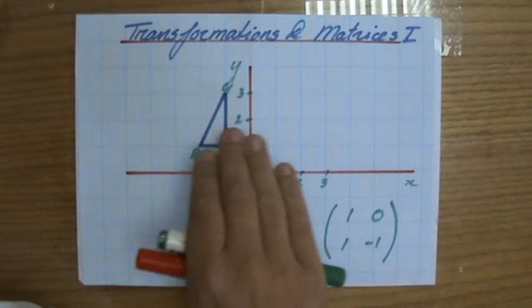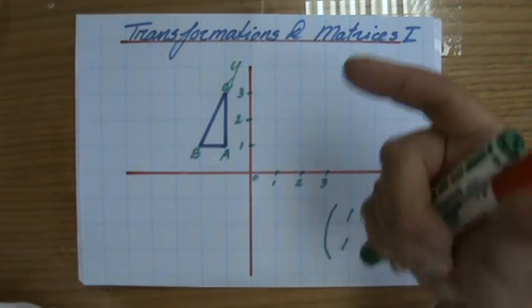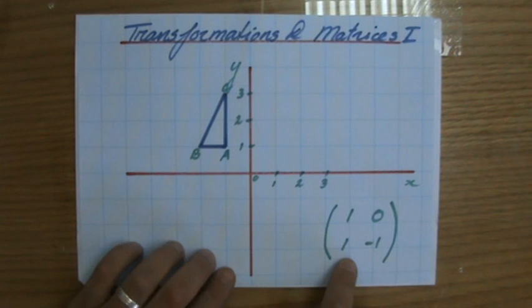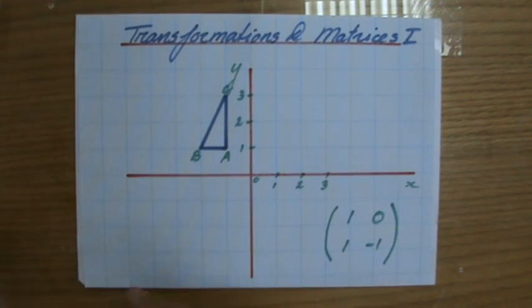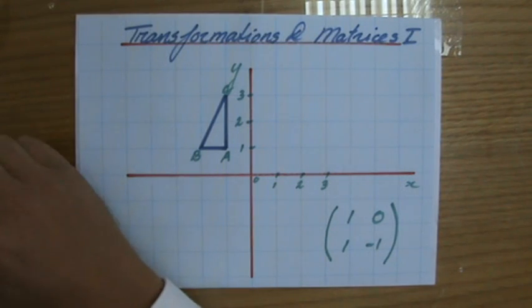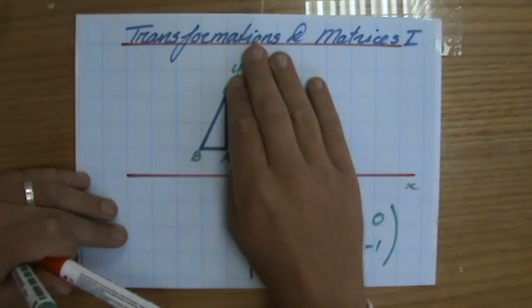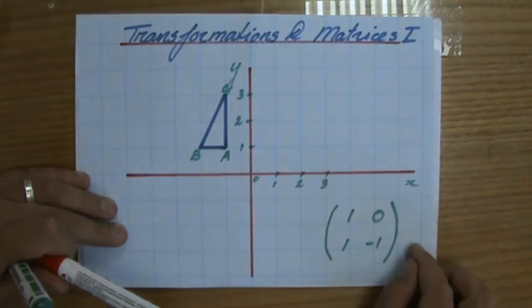But now we're going to do transformations using a particular matrix. I've written down here the 2x2 matrix: 1, 0, 1, minus 1. You will always, for your IGCSE, only have to do transformations with 2x2 matrices.